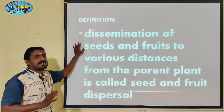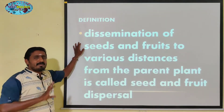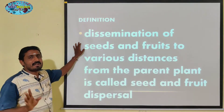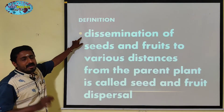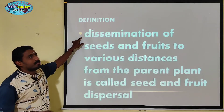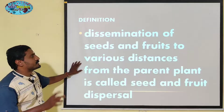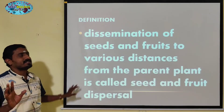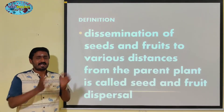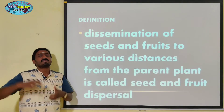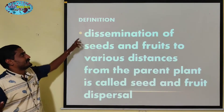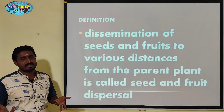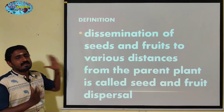Key words are one or two. If you have any key words, you can use them in the board examination. Dissemination, spreading of seeds and fruits to various distances from the parent plant is called seed and fruit dispersal. The seed is dispersed through various agents.